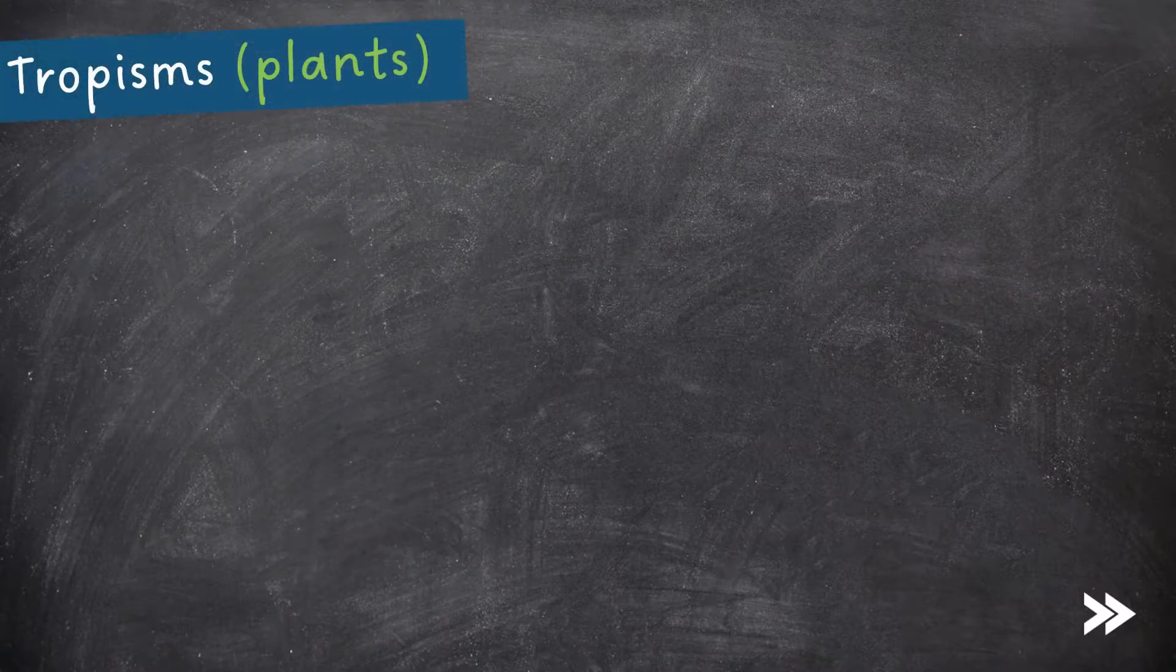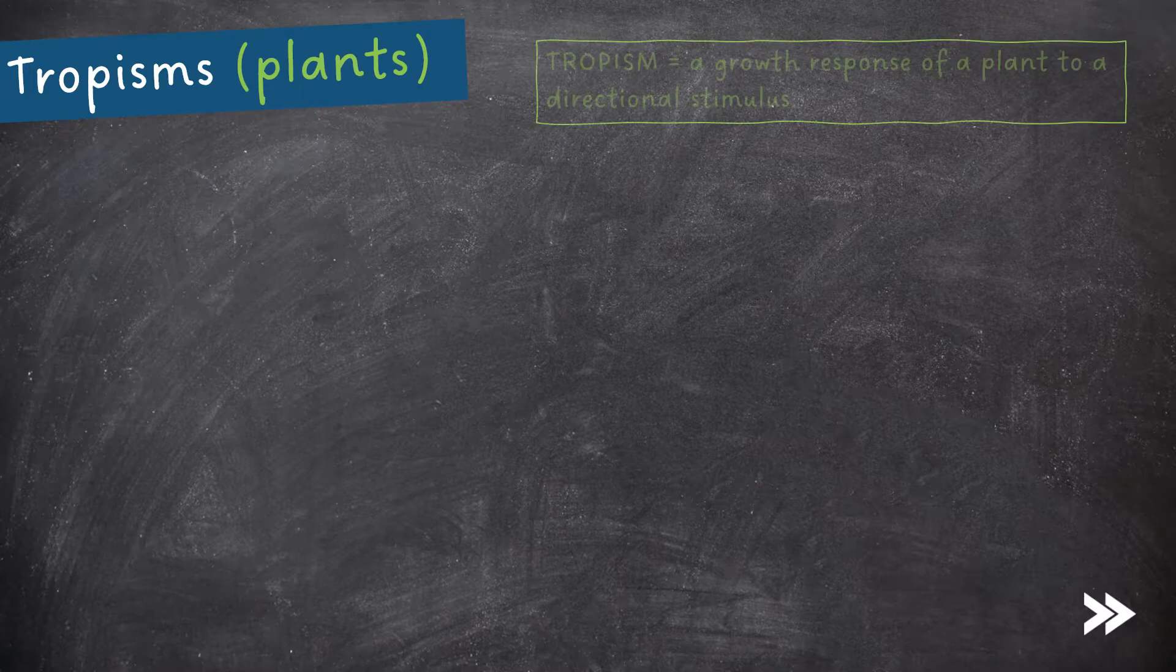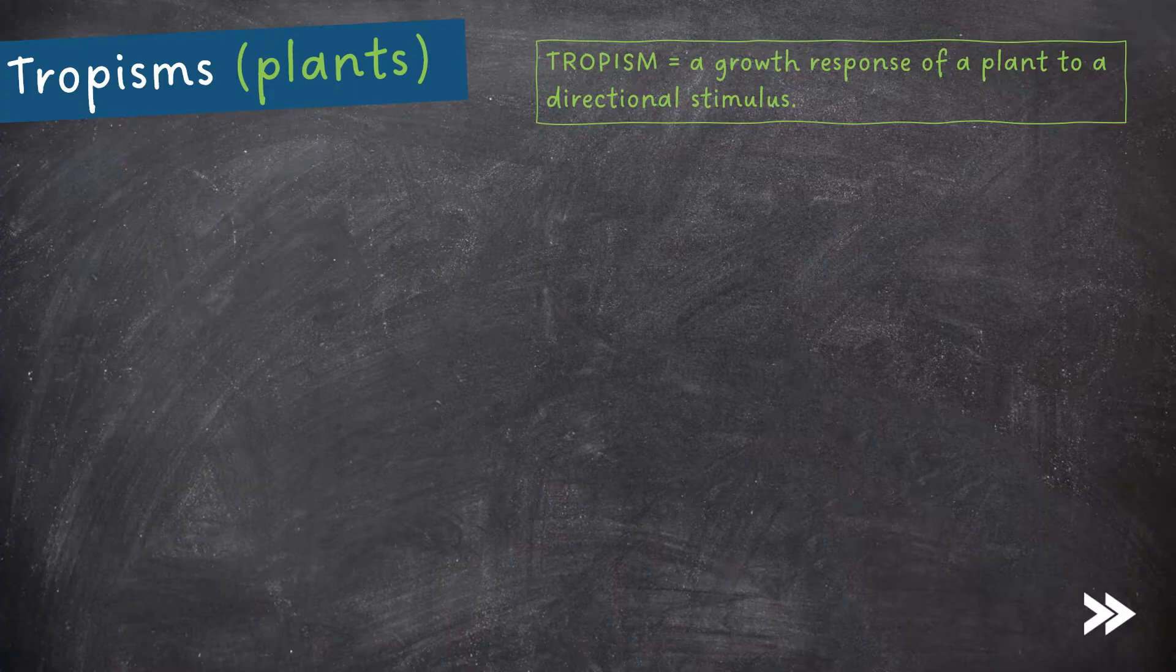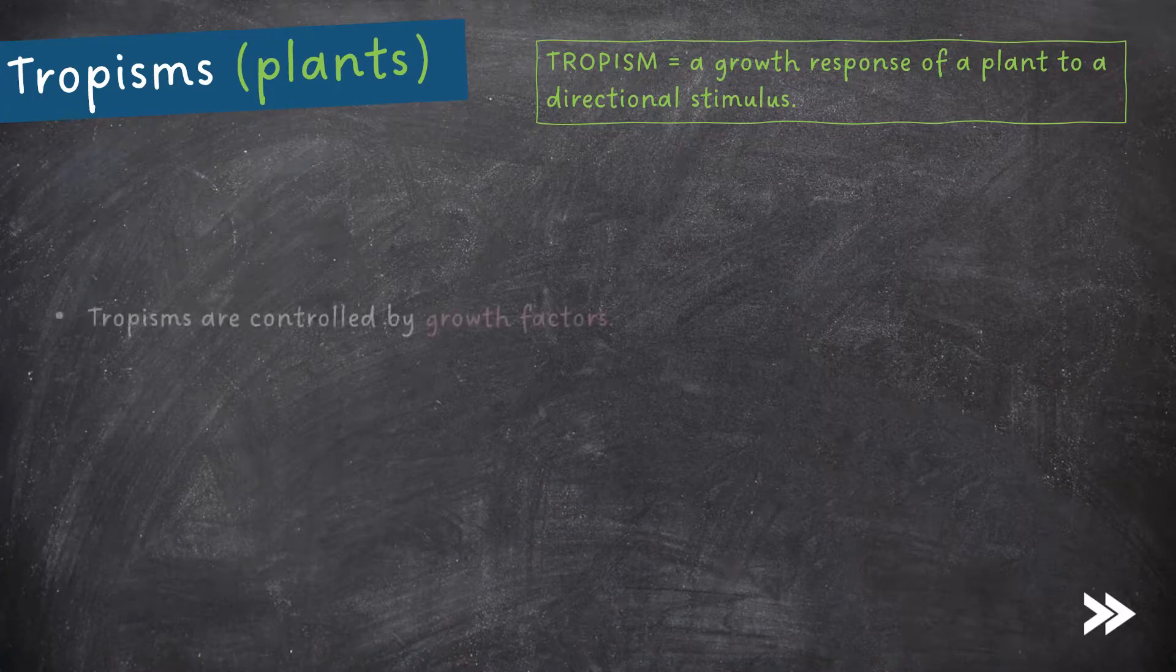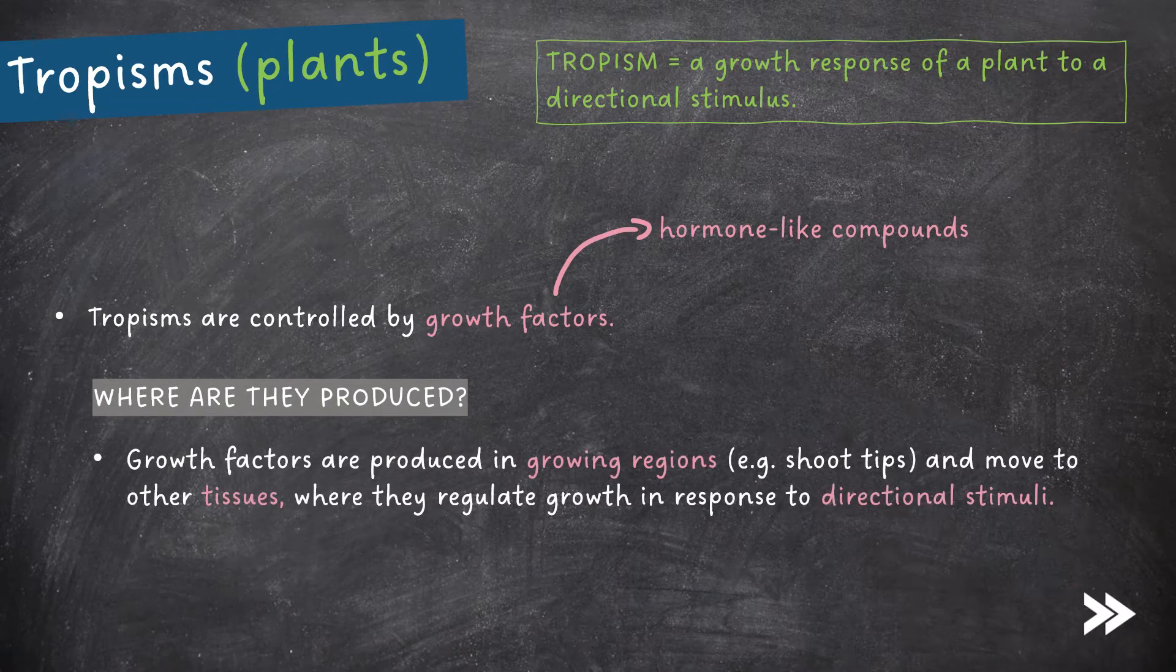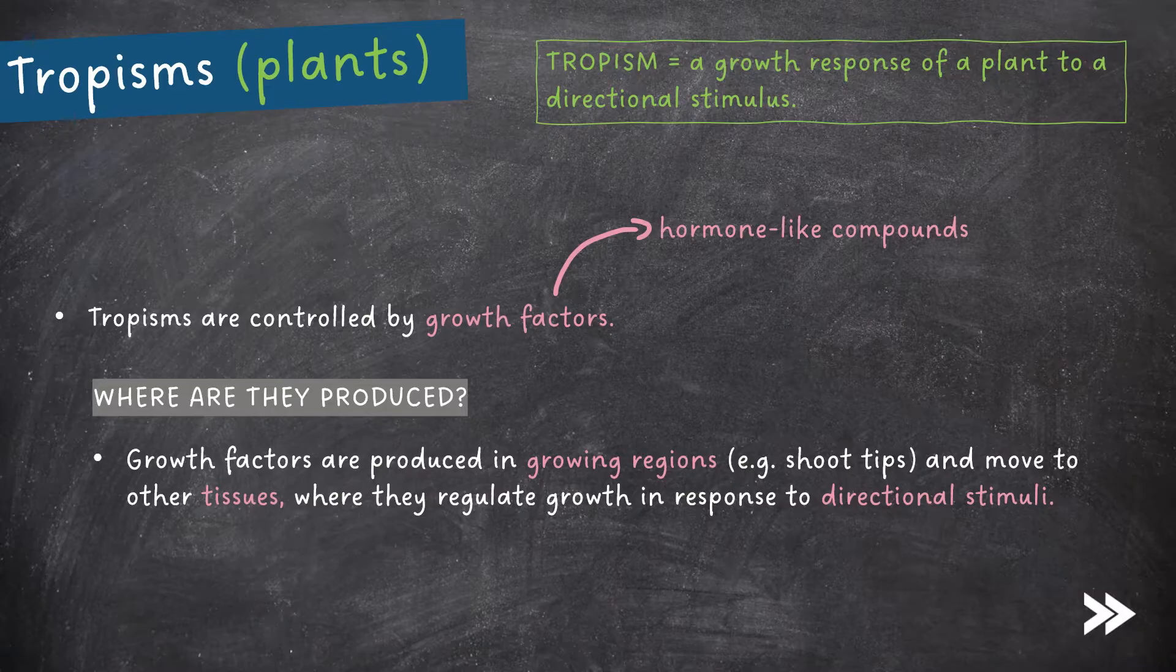Let's start with tropisms in plants. A tropism is a growth response of a plant to a directional stimulus. Tropisms are controlled by growth factors, which are hormone-like compounds. Growth factors are produced in growing regions, such as shoot tips, and move to other tissues, where they regulate growth in response to directional stimuli.